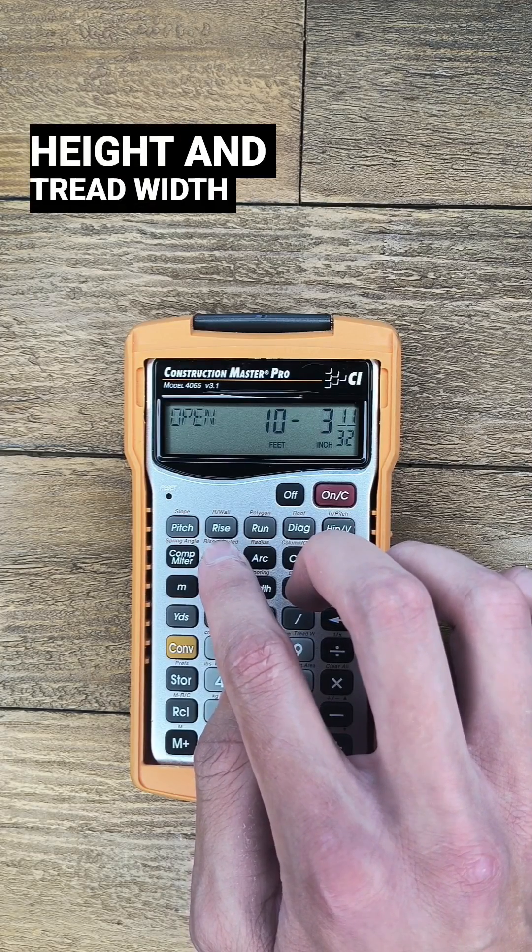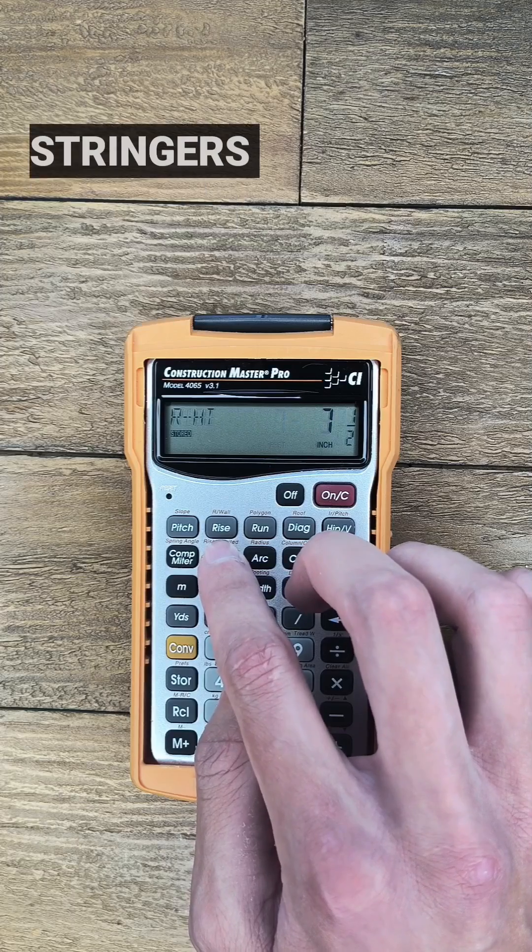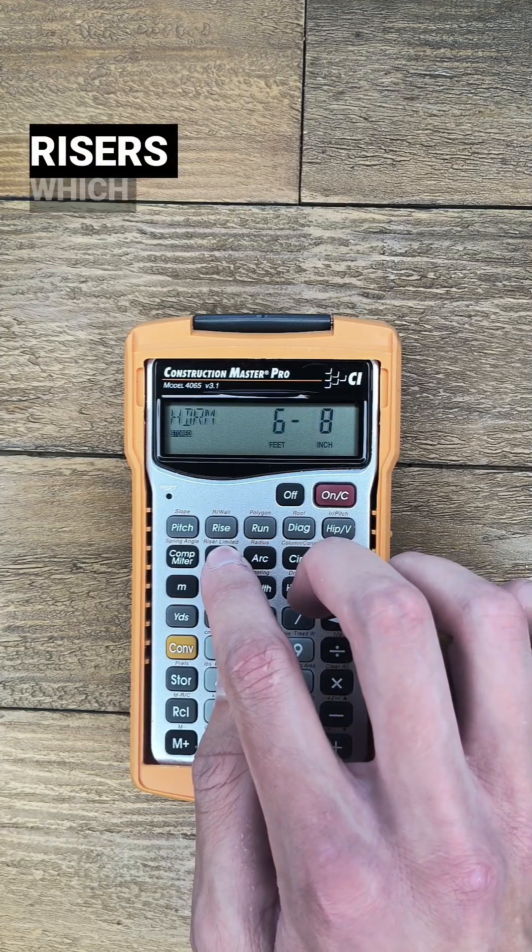The riser height and tread width is all the same for the upper and lower stringers. And I'm left with 12 risers which is what I want.